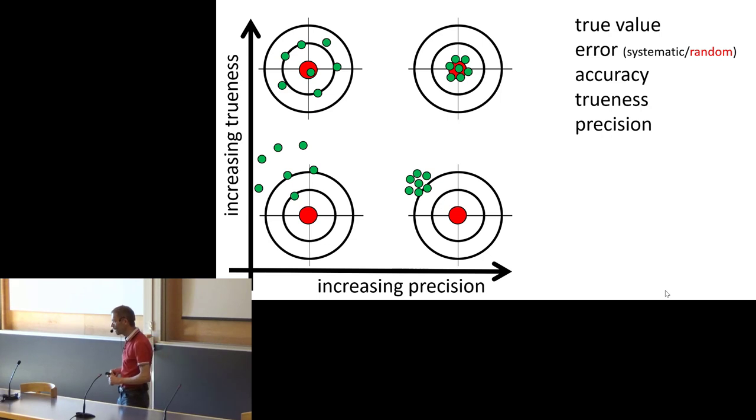And that would look like this. In the upper case, where you have a high trueness, now the precision is also high, which you see on the horizontal axis. So there is less spread in the data points. That indicates precision, and that is related to the random part of the error.